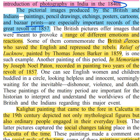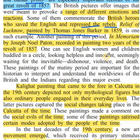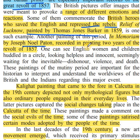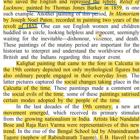Some of them commemorate the British heroes who saved the English and repressed the rebels. Relief of Lucknow, painted by Thomas Jones Barker in 1859, is one such example. Another painting, In Memoriam by Joseph Noel Patton, recorded in painting the trauma of the revolt of 1857. One can see English women and children huddled in a circle, looking blessed and innocent, seemingly waiting for the inevitable dishonor, violence and death.